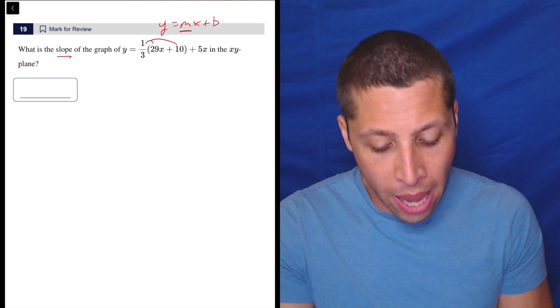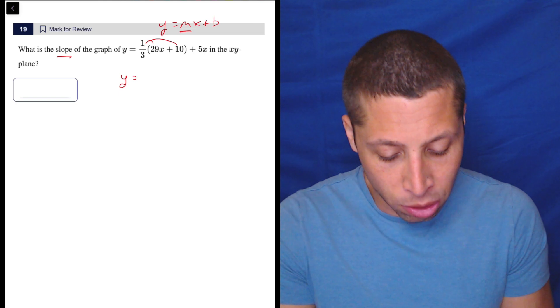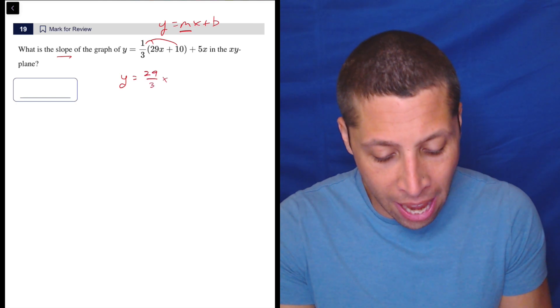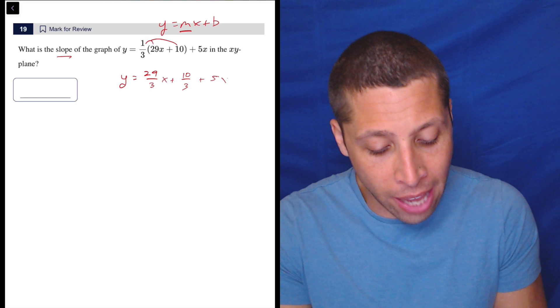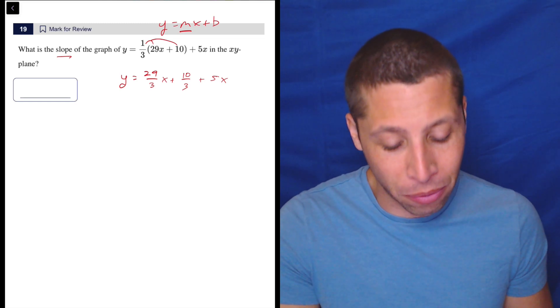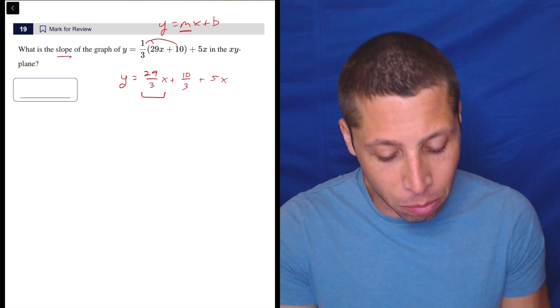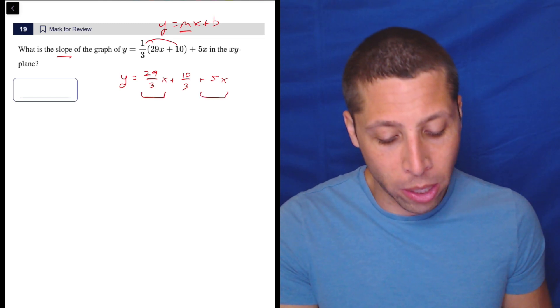Let's get it back. So we're going to first distribute, and it's kind of messy, but it's okay. So we have 29 thirds x plus 10 thirds plus, don't forget, there's this extra 5x here. That's what most people forget. So we still need to combine like terms. We need to combine the 5x with the 29 thirds x.